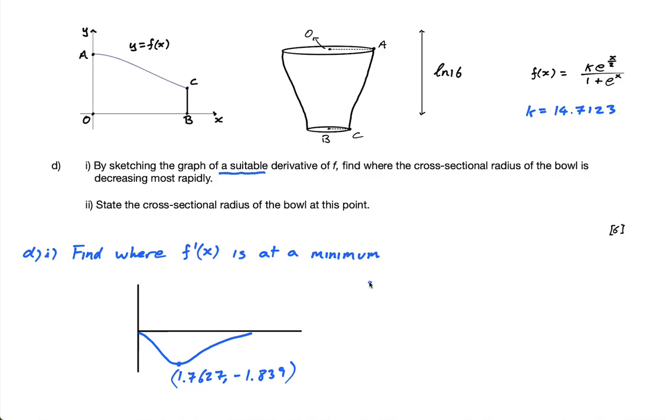So I'm going to say, therefore, where is it, where is this graph decreasing most rapidly? Well, it's decreasing most rapidly when x equals 1.7627. It's not this, this value actually tells us the gradient of this curve, it tells you the rate at which it is decreasing, but that's not what they've asked us for. They've asked us for where is it happening, and it's happening there.